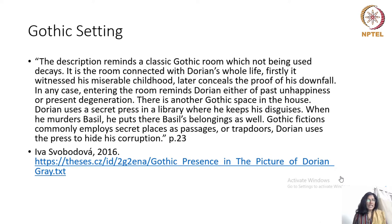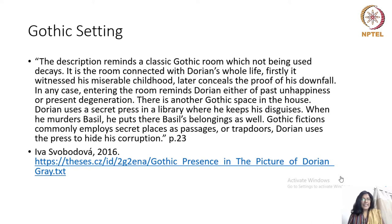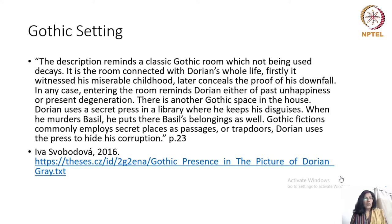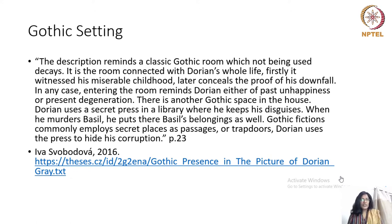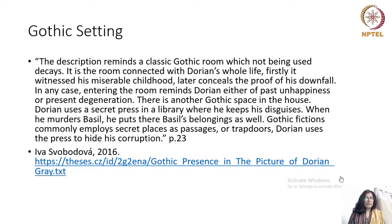There is another Gothic space in the house. Dorian uses a secret press in a library where he keeps his disguises. When he murders Basil, he puts Basil's belongings there as well. Gothic fiction commonly employs secret passages, hidden places, or trapdoors. Dorian uses the press to hide his corruption.